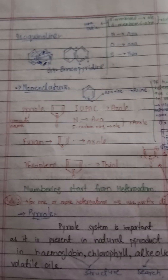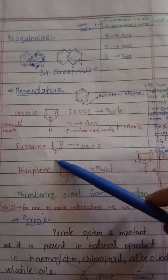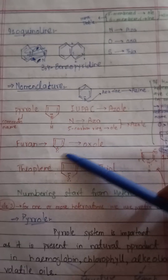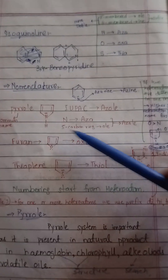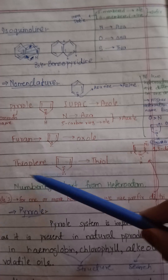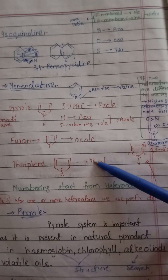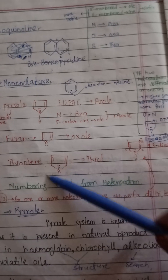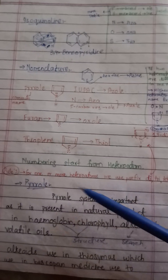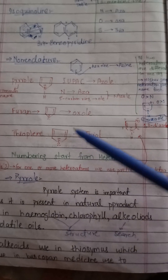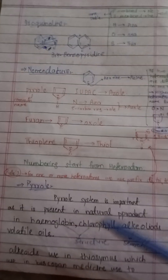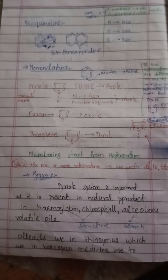Furan has oxygen as the heteroatom and is 5-membered, so its IUPAC name is 'oxole'. Thiophene has sulfur as the heteroatom and is 5-membered, so its IUPAC name is 'thiole'. The numbering always starts from the heteroatom — sulfur is given position 1, then 2, 3, 4, 5.